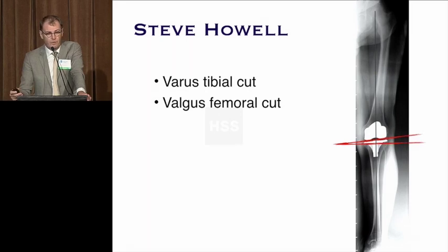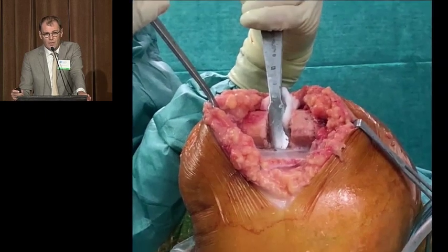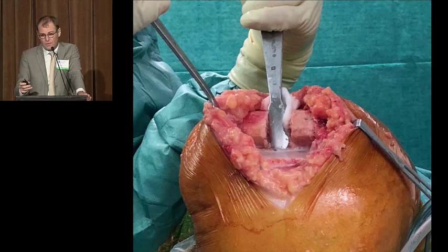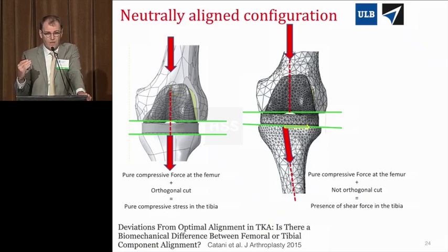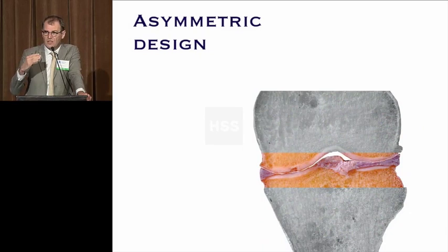Steve Havel proposed solving this problem by performing a varus tibial cut and a valgus femoral cut. I'll be straightforward: I don't like the varus tibial cut. I perform a perpendicular cut on the tibia in my daily practice, because the human eye is good at recognizing perpendicular and parallel positions but poor at judging three, five, or seven degrees of varus — and I fear crooked knees. Fabio Cattani's finite element analysis showed that leaving the tibia in varus overloads the medial compartment, whereas changing the femoral component position appears to be acceptable.